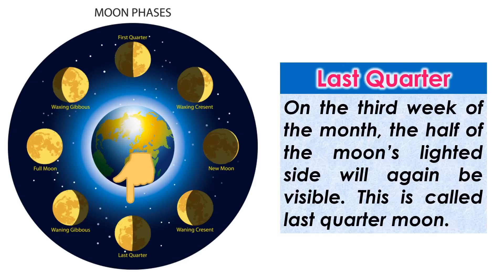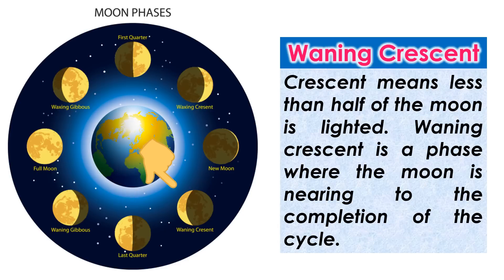Last quarter. On the third week of the month, half of the moon's lighted side will again be visible. This is called last quarter moon. Waning crescent — crescent means less than half of the moon is lighted. Waning crescent is a phase where the moon is nearing the completion of the cycle.